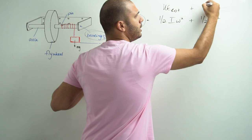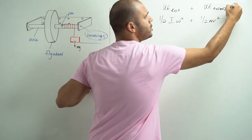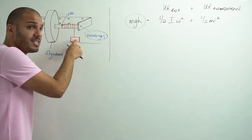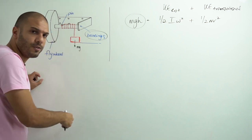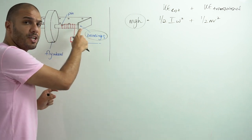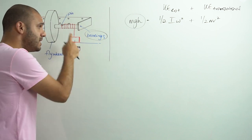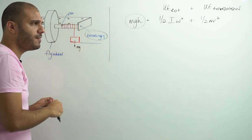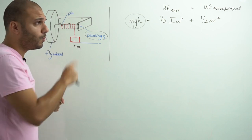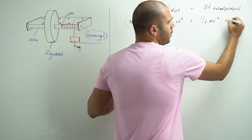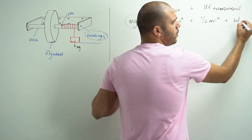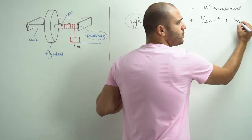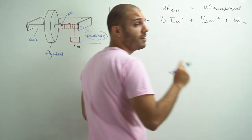Then you have what is known as translational KE — that is the kinetic energy of the mass moving downwards. Now if there's going to be friction within the bearings and mounting, then some of this potential energy is going to be used as work to overcome such friction. So we do need to add one more parameter to that equation: work done due to friction.